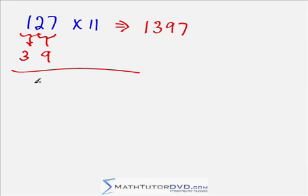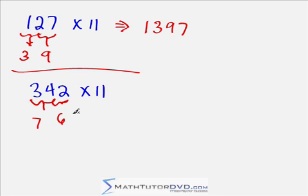Now what if you have 342 times 11? You have the same thing. We'll add the first two guys. 3 plus 4 is going to give me 7. 4 plus 2 is going to give me 6. And so to find the answer, I sandwich these guys between the first and last digit. 3, 7, 6, 2. And this would take you quite a long time to do by hand.